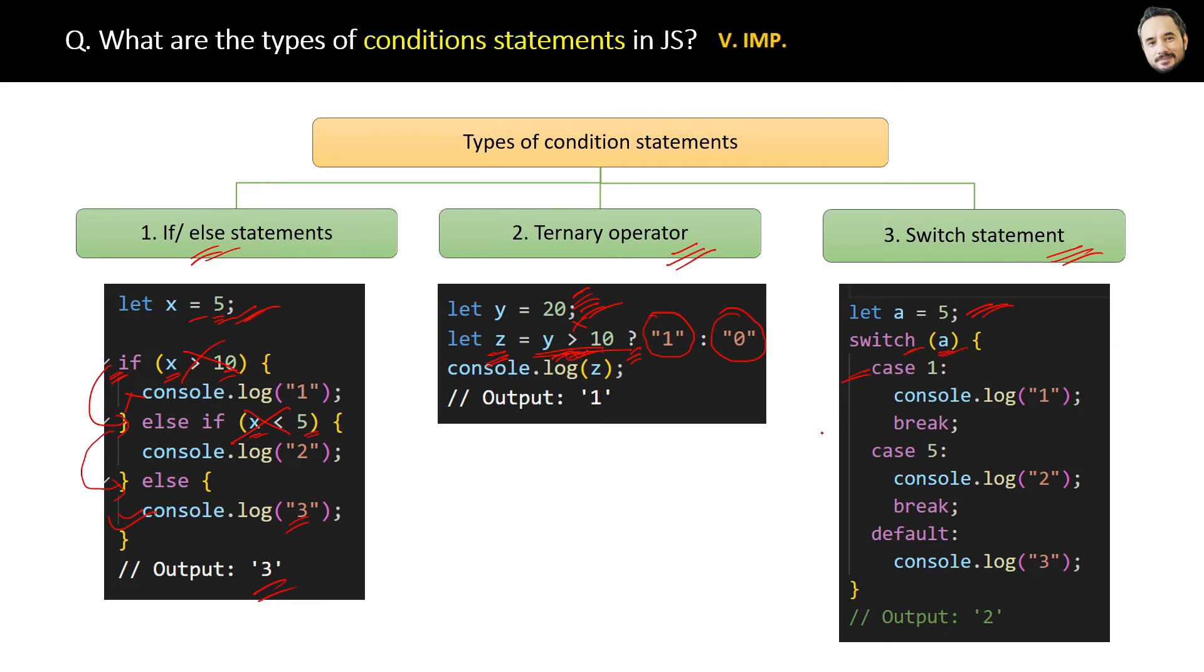If a is equal to 1, which it is not, therefore it will not execute this case code. Then the next case is true because a equals 5, which is true. Therefore, execution will go inside this case and print 2 on the console. Then this break statement will exit the code from the switch statement.